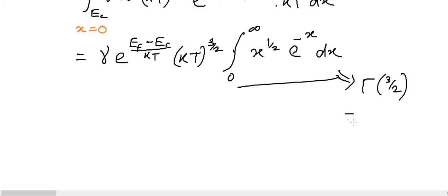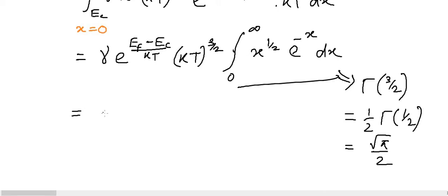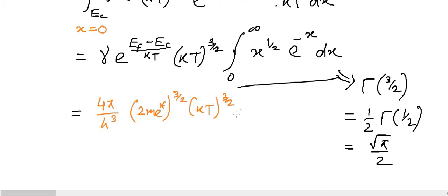Using the identity gamma(n+1) = n·gamma(n), we get gamma(3/2) equals (1/2)·gamma(1/2), and we know gamma(1/2) equals sqrt(pi). So this equals sqrt(pi)/2. Now substituting the value of small gamma = (4 pi / h^3)(2 m_e*)^(3/2), we can write N equals 2·(2 pi m_e* kT / h^2)^(3/2) times e^((E_F minus E_C) / kT).